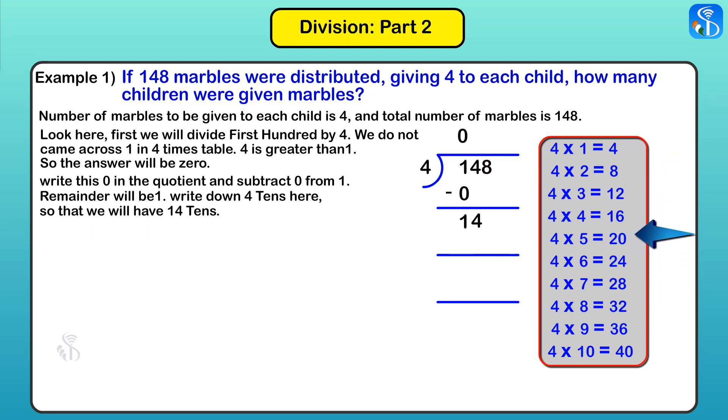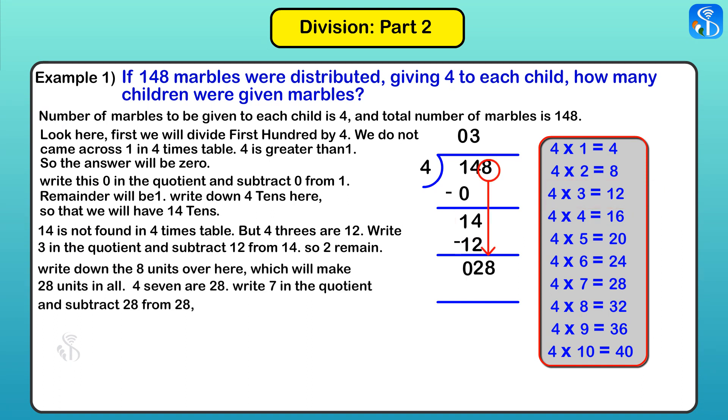14 is not found in the 4 times table, but the closest smaller number than 14 is 12. 4×3=12, so 3 is in the quotient. Subtract 12 from 14, 2 remains. We will write down the 8 units over here.